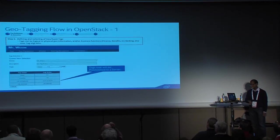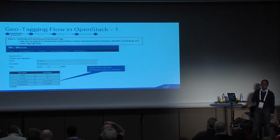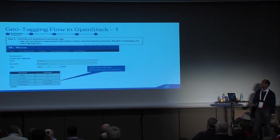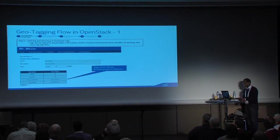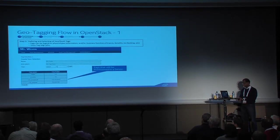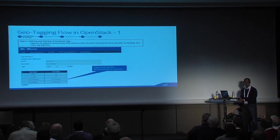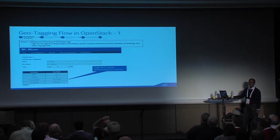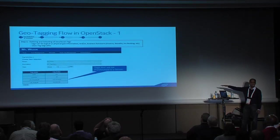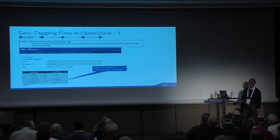I was going to show a demo but I'm having issues with my wireless connector, so I'll walk through a set of screenshots. This is how you set up tags — the tag doesn't have to be one thing. In this example you see state, country, and latitude and longitude. There's no constraint on how many — you could add a functional tag like 'PCI server.' You can have a heterogeneous set of tags.